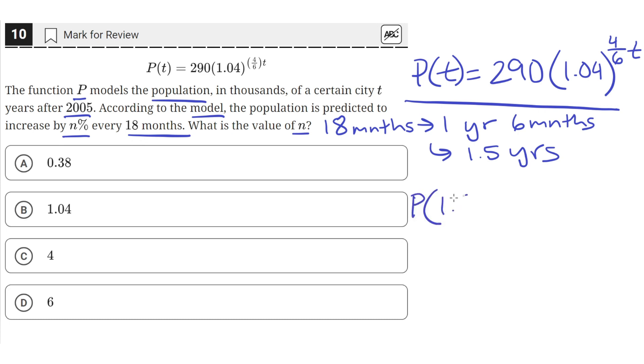So P of 1.5 is 290 times 1.04 raised to the 4/6 times 1.5. This simplifies to 290 times 1.04 raised to the first, because 4/6 times 1.5, if you put that in your calculator, just equals 1. So this is just 290 times 1.04.